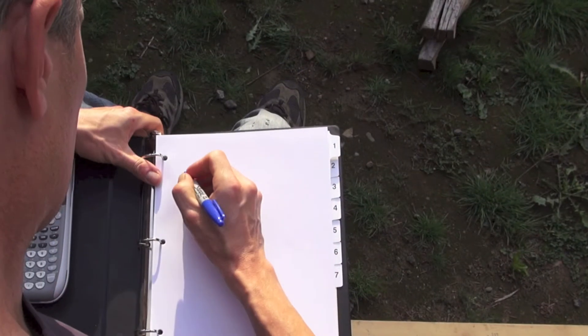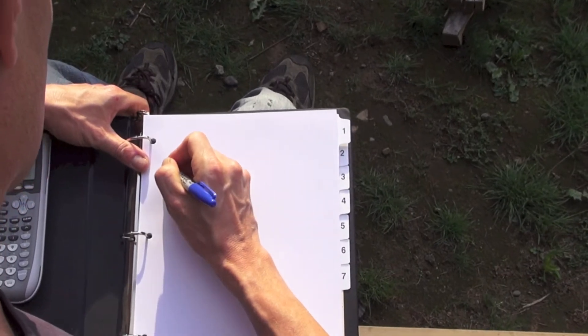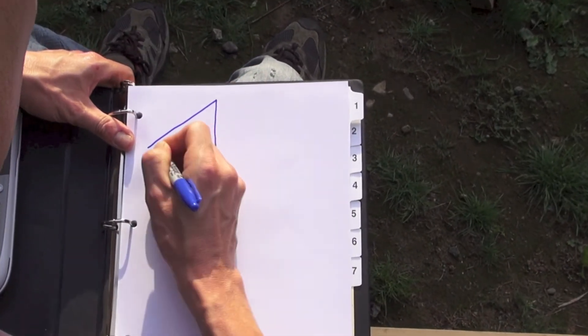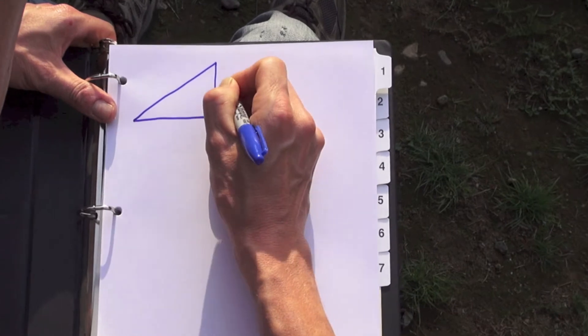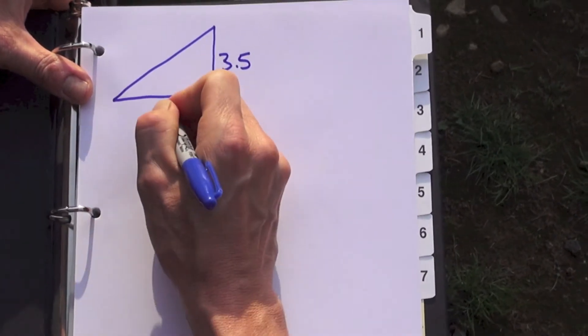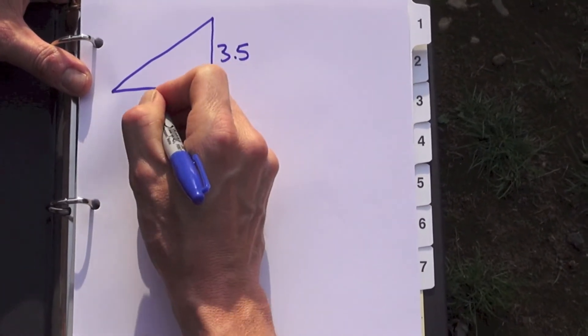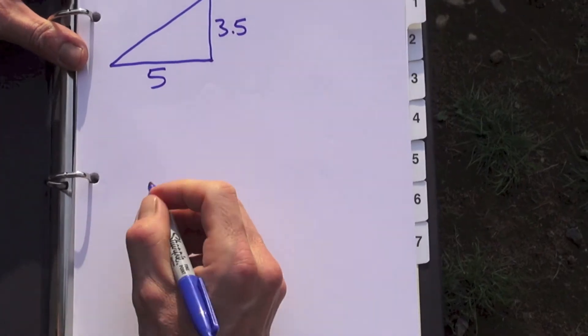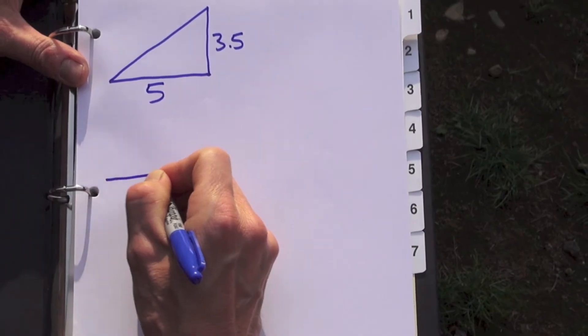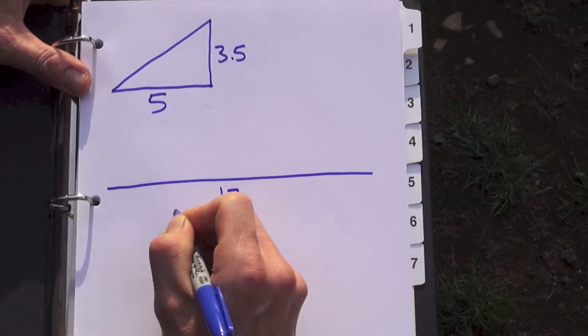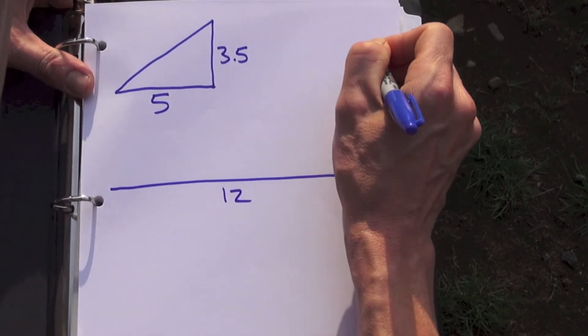All right, so to figure out how our roof compares to standard roof pitches we're going to use some similar triangles here. Our roof is 3.5 feet the rise and the run is five feet. Now we want to know how would that compare if this was 12. So I'm going to imagine that it's 12 feet, we want to know how high up does that go.